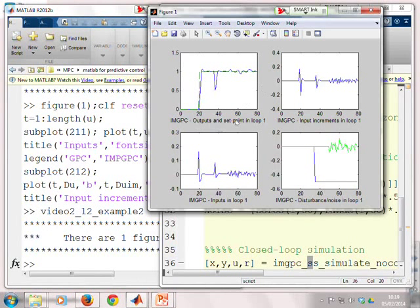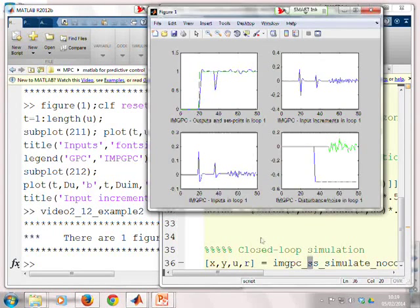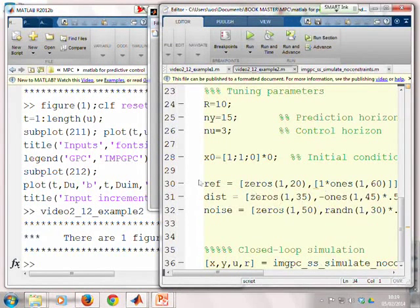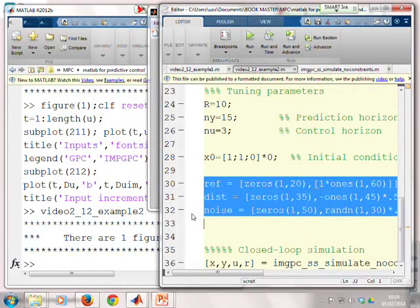And what the file will do is this particular one is showing tracking performance, disturbance rejection, and noise rejection, all in the same figure, but clearly that definition is based here and you can change that to suit your own needs.